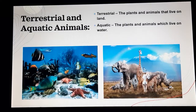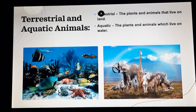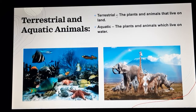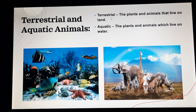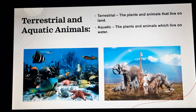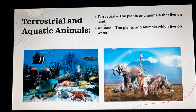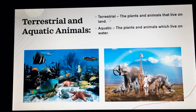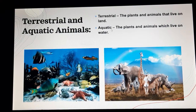The next topic is terrestrial and aquatic animals. Terrestrial refers to the plants and animals that live on land — all of them comprise terrestrial life. The next one is aquatic.